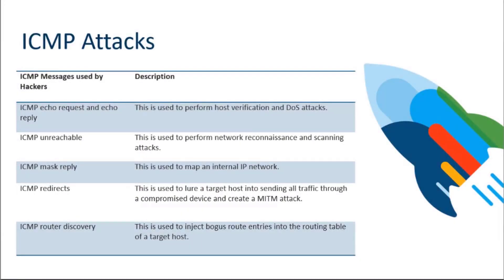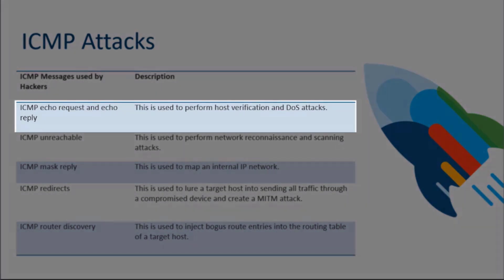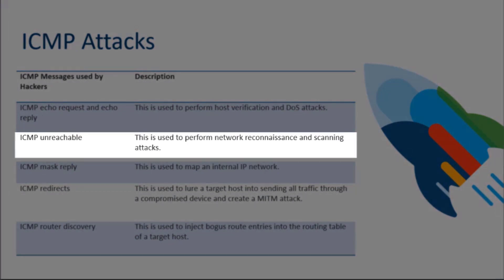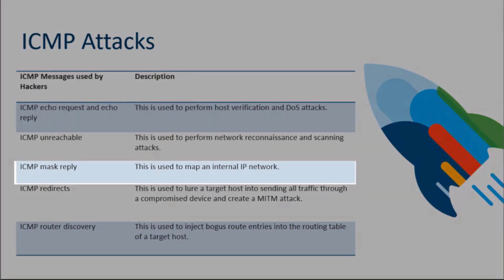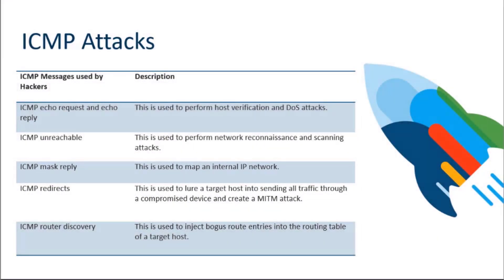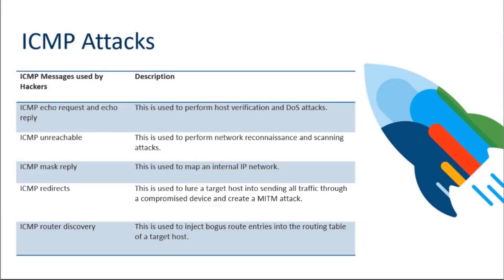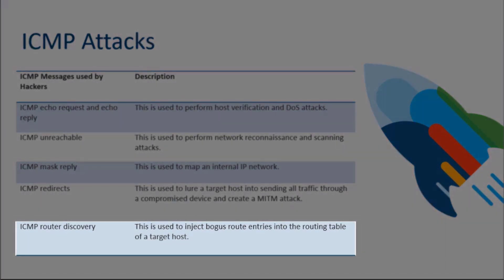ICMP attacks have a variety of uses, but commonly they are for host verification and denial of service — using ICMP echo requests and echo replies, which are the standard ping messages. With ICMP unreachable messages, we can perform network recon and scanning attacks. With mask reply, we can attempt to map an internal IP network. With redirects, we try to lure a targeted device into sending all its traffic through a compromised device, enabling a man-in-the-middle attack. And with router discovery, we attempt to inject bogus route entries into the routing table of a targeted host.